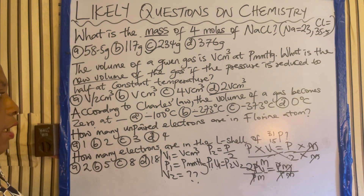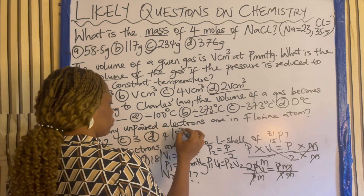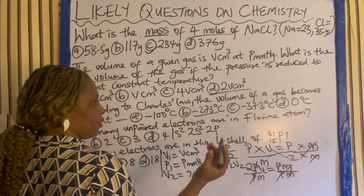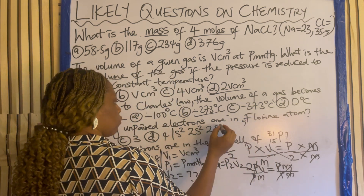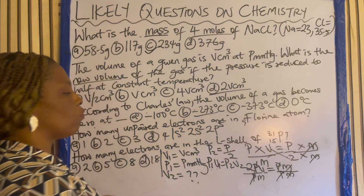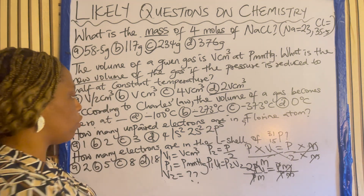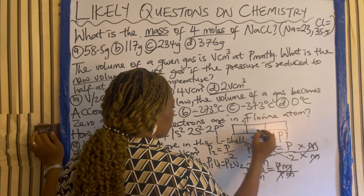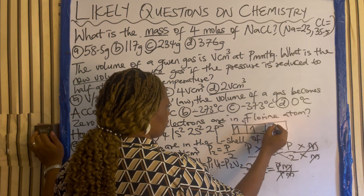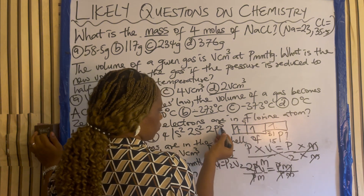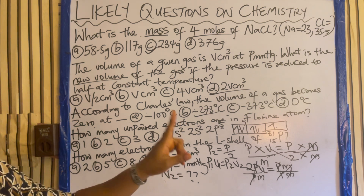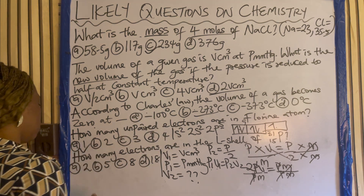How many unpaired electrons are in a fluorine atom? Write out the electronic configuration: 1s², 2s², 2p⁵. Fluorine is atomic number 9, so 2p⁵. When looking for unpaired electrons, simply consider the p orbital. The p orbital fills singly: you have 5 electrons in 2p — 3 orbitals, with 3 paired first, leaving 1 unpaired. So the answer is 1.